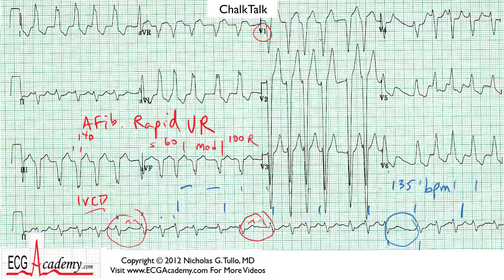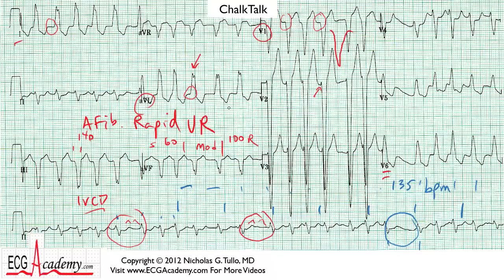Look for V1. A left bundle branch block will be characterized by a very deep negative deflection with no septal R wave in V1. You may have a little R wave that grows, but it remains deeply inverted until a transition point. In V6, often you'll see notching — the lateral leads including V6, as well as leads I and aVL, showing a notched QRS complex, is characteristic of left bundle branch block. You also have to make sure you don't see septal R waves in V1 or septal Q waves in leads I and aVL, which confirms a true left bundle branch block rather than an atypical left bundle or left-type IVCD.